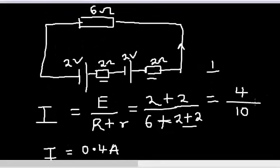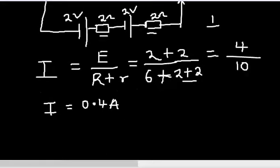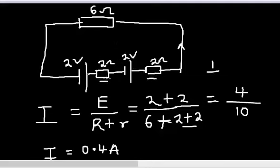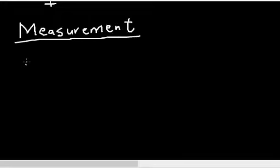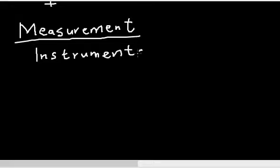I hope that is well understood. This is one application of internal resistance, lost volt, and terminal voltage of a battery. We will look at more questions as we proceed. In the next video, we are going to talk about measurement of unknown resistance, including measuring instruments and instrumentation. See you in the next video — thank you very much.